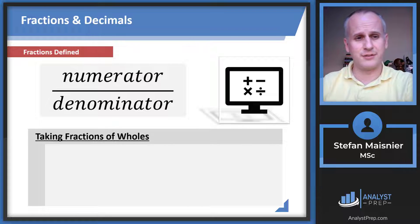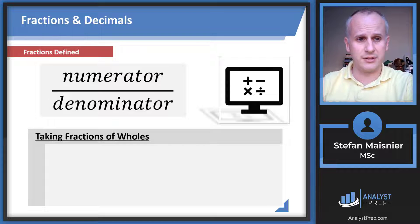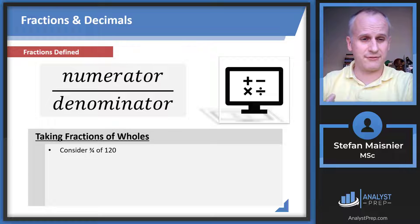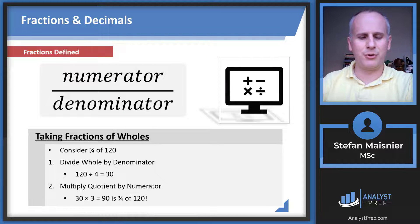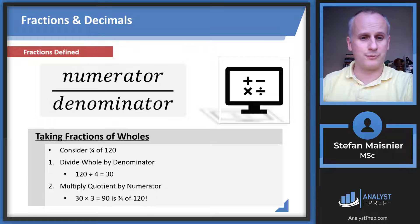Let's consider the idea of taking fractions of a whole. There's a really nice mental manipulation that you can do to simplify this. Let's take three quarters of 120. Rather than multiplying this out, first divide the whole by the denominator. So take 120 and divide it by four to reach 30. Then multiply that quotient by your numerator, so 30 times three equals 90.